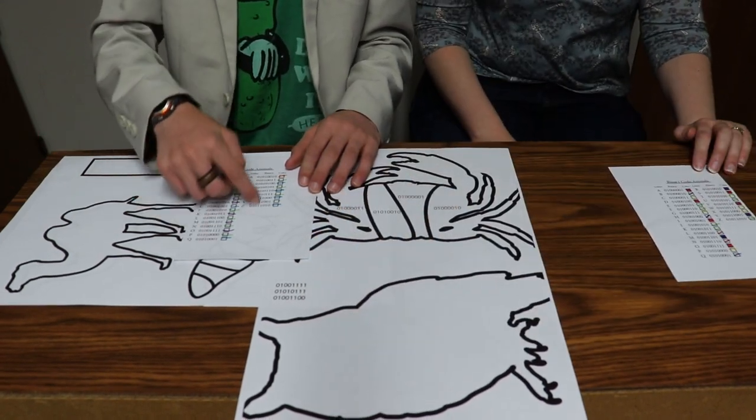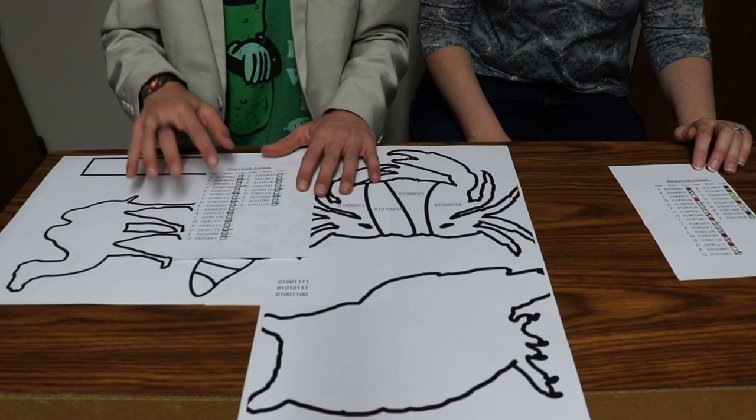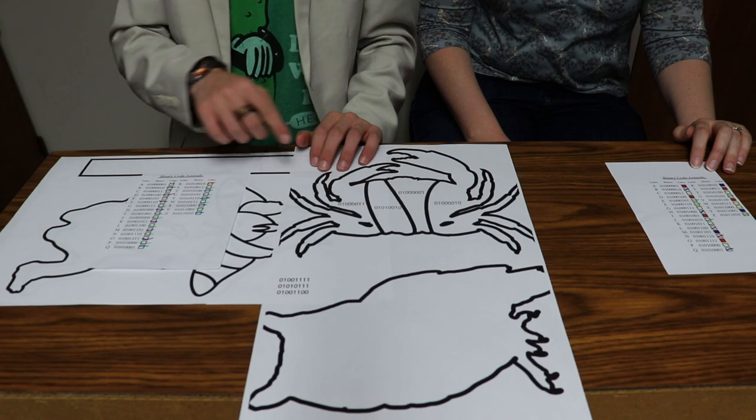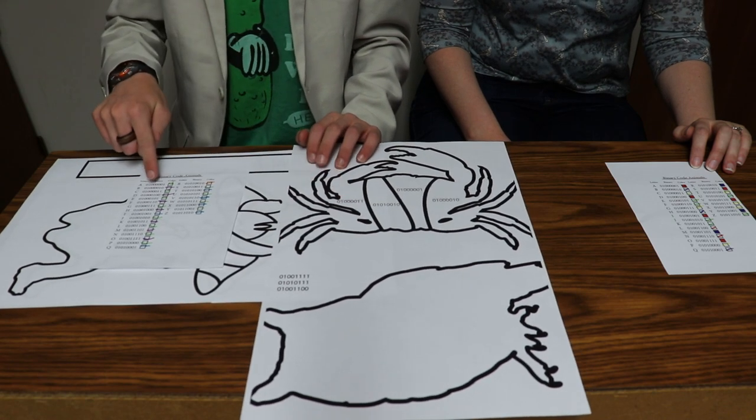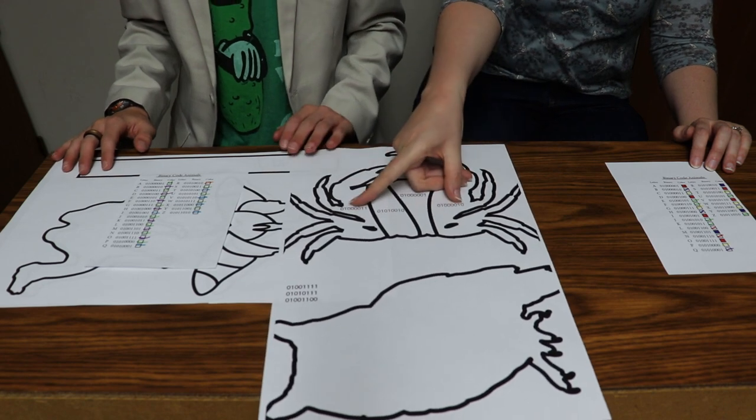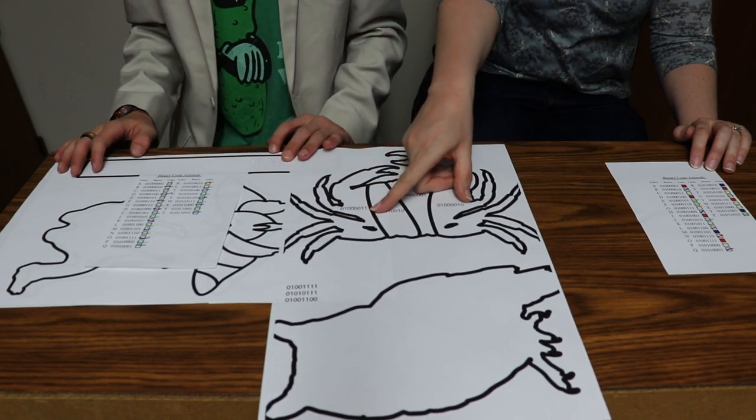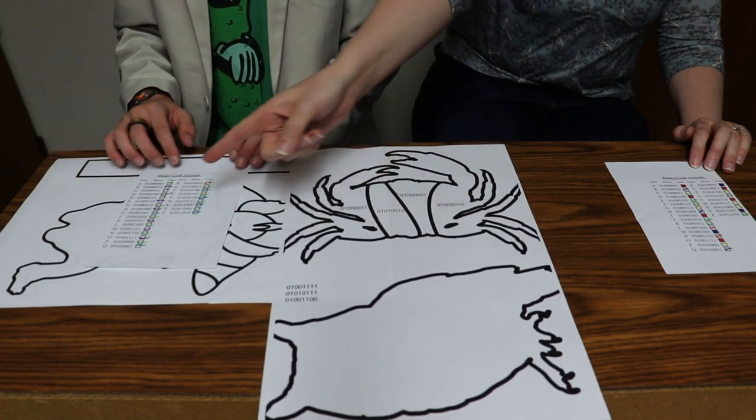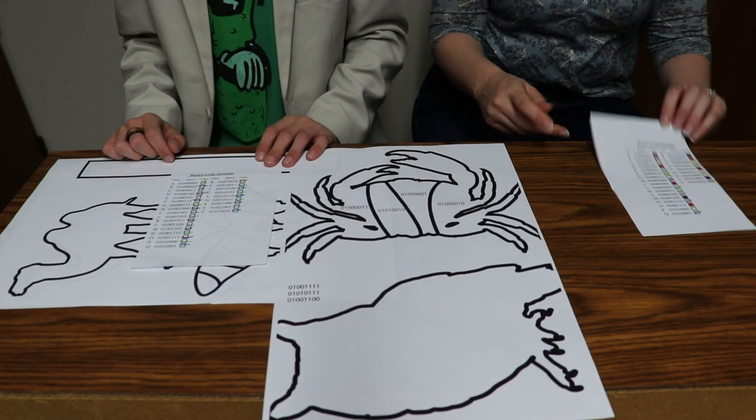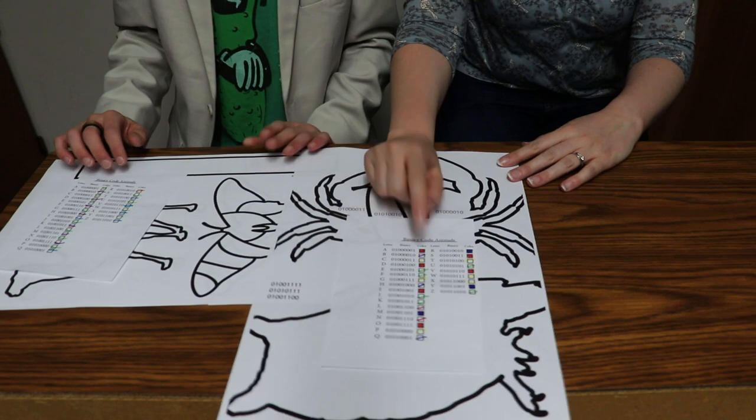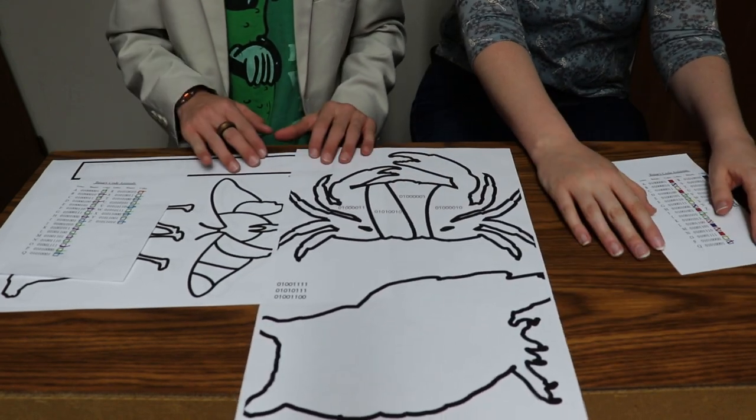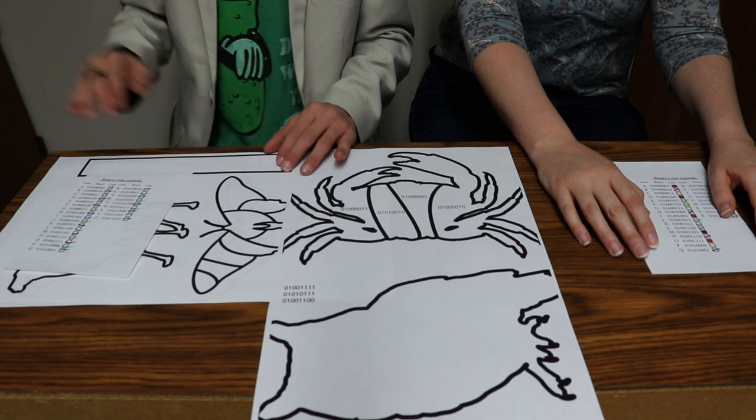What happens is now you are putting in the instructions for if this then this. So if it says this then you color it that color. So if it says zero one zero zero zero zero one one, then we know it's the letter A and the assignment is the color green, unless you're me because I put in the color red so they'll all be different.